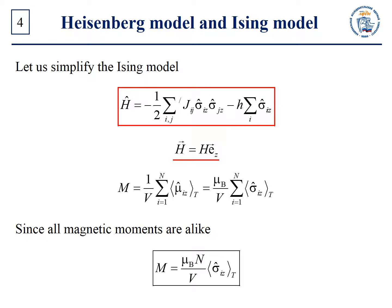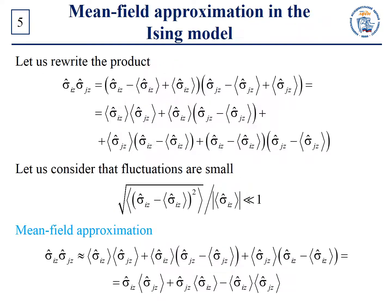Contrary to the case of non-interacting magnetic moments, there is now a term that accounts for interaction of moments with one another. As before, our objective is to find magnetization m as a function of T and H. For magnetization, we have the following expression. Since all magnetic moments are alike, the value of average σiz does not depend on i, and hence magnetization takes the following form, where one can take σiz for any one of N moments. In general, this problem has no exact analytic solution, and one must either resort to numerical calculations or make use of one or another approximation.